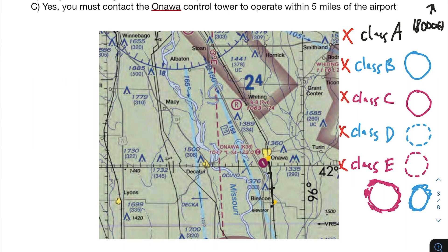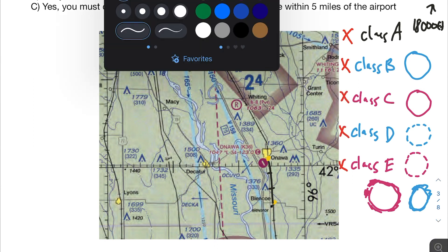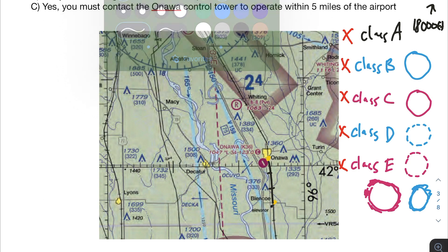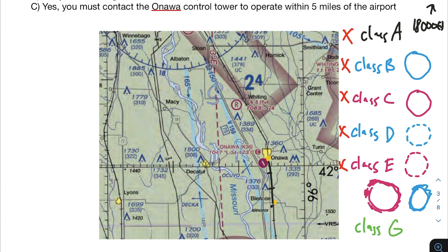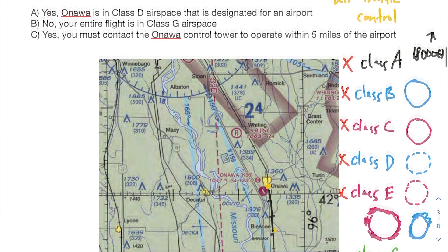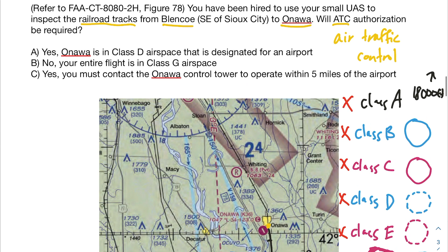So we're not in class A, not class B, not C, not D, not E. What's left? It seems like you are in class G airspace — G for good. We don't need anyone's permission, we don't need to talk to air traffic control. The right answer to this problem is B: no, your entire flight is in class G airspace.